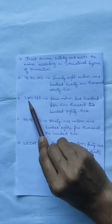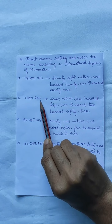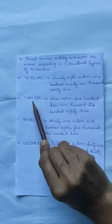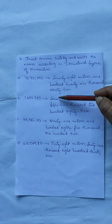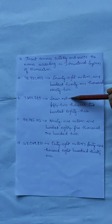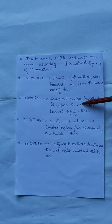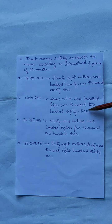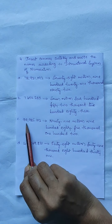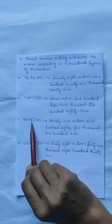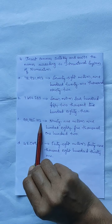Second one: 7,452,283. This is about commas — 7,452,283. Next one: 99,985,102.